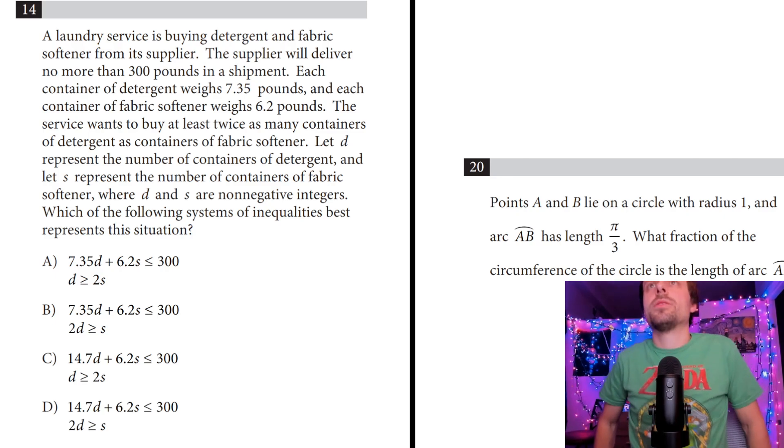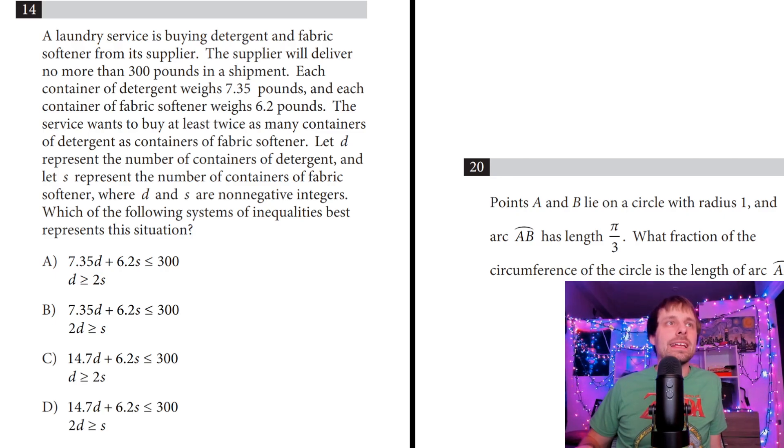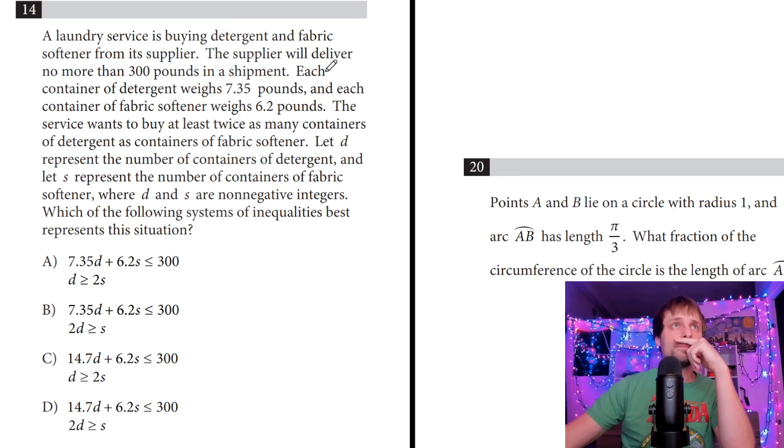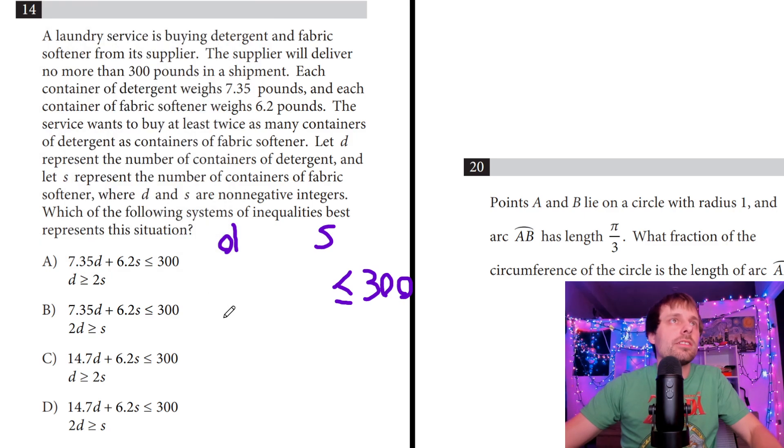So let's hide Desmos and jump down to number fourteen here. So there's a lot going on. Already I can see from the answers that this is going to be like two linear equations. Sometimes we have to derive them. Sometimes they're context based, big paragraph. This is going to be context based. So let's try to form our own equations and see if they match up with one of our answers. So we have detergent and fabric softener. So it looks like they use d for detergent and then s for the fabric softener. The supplier will deliver no more than 300 pounds. So I already know it's less than or equal to 300, but that has, that's in all my answers. That doesn't help.